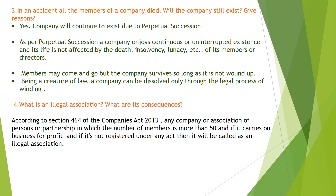The fourth question is: what is an illegal association and what are its consequences? According to Section 464 of the Companies Act of 2013, any company, association of persons, or partnership in which the number of members is more than 50, carrying on business for profit, but not registered under any act, will come under an illegal association. Three things to remember: it has more than 50 members, it runs business for profit, but it is not registered under the Companies Act.